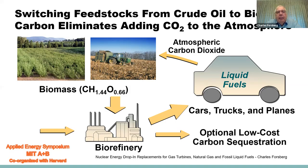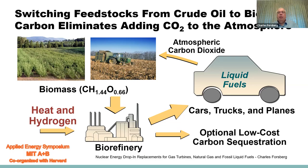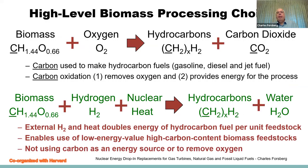What we are proposing is switching feedstocks from crude oil to biomass carbon to eliminate additions to the atmosphere. We have our biomass — a mixture of carbon, hydrogen, and oxygen — which we send to a nuclear biorefinery where we add massive quantities of heat and hydrogen to produce liquid hydrocarbon fuels for cars, trucks, and airplanes. The fuels are burnt, the carbon dioxide goes to the atmosphere and is recycled back to the biomass system. At the biorefinery site, we also have the option to produce and separate out carbon dioxide for low-cost carbon sequestration.